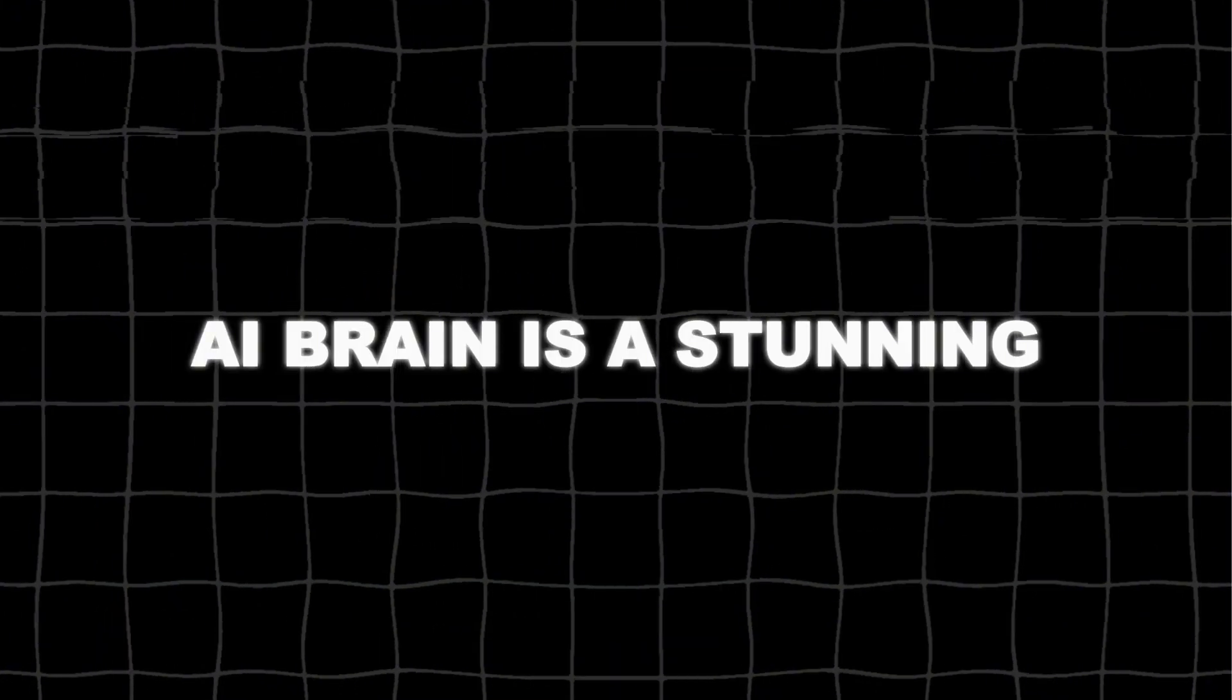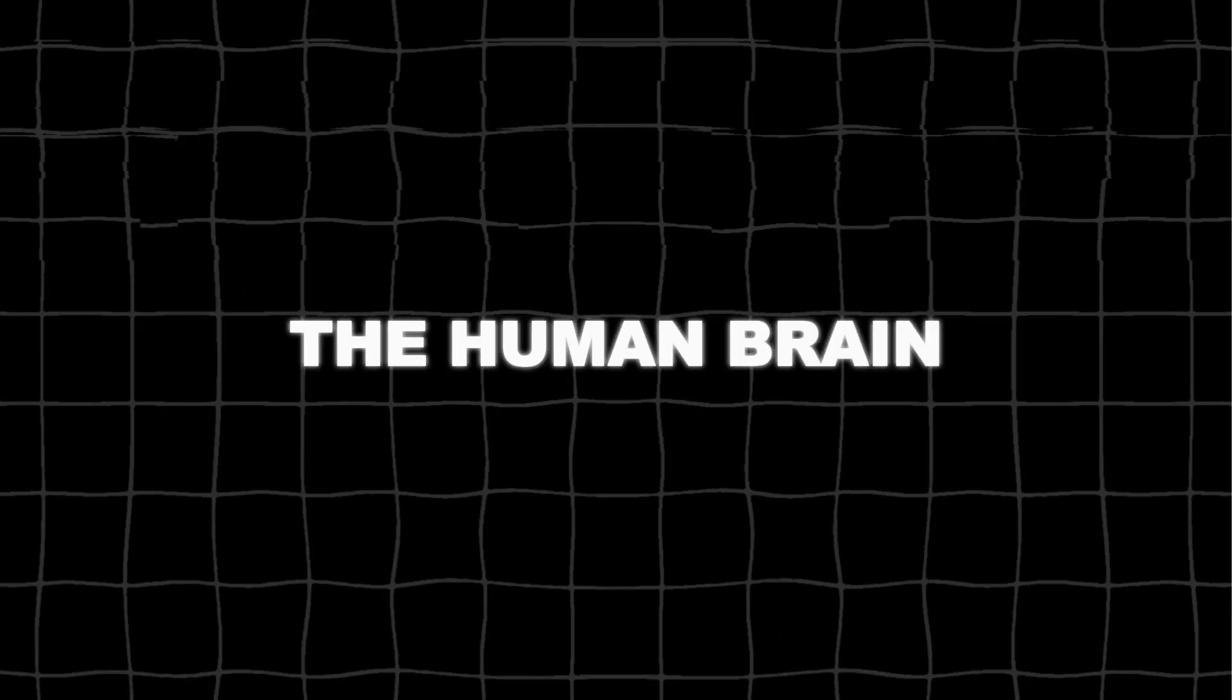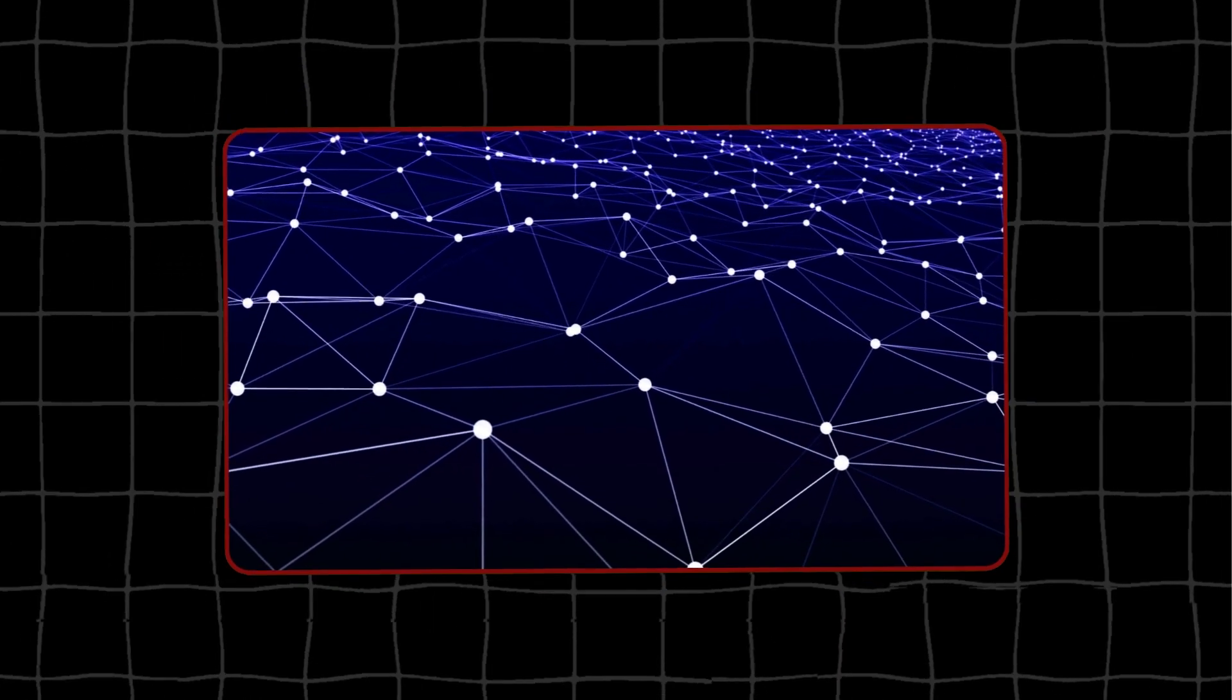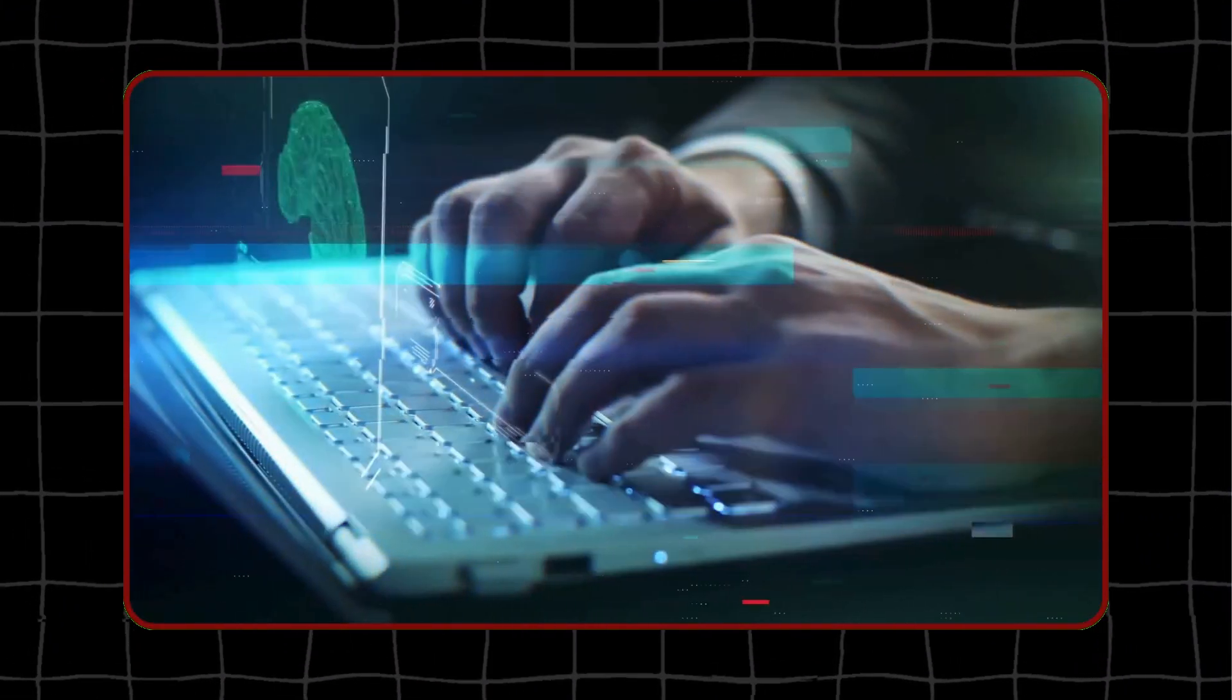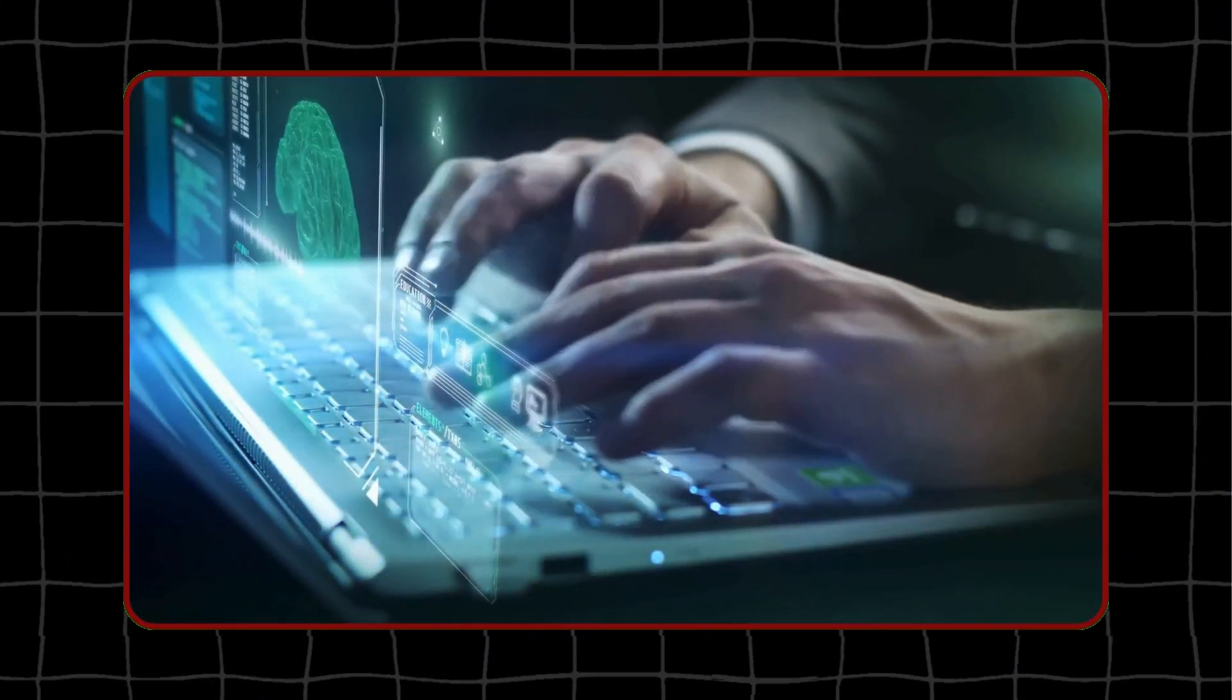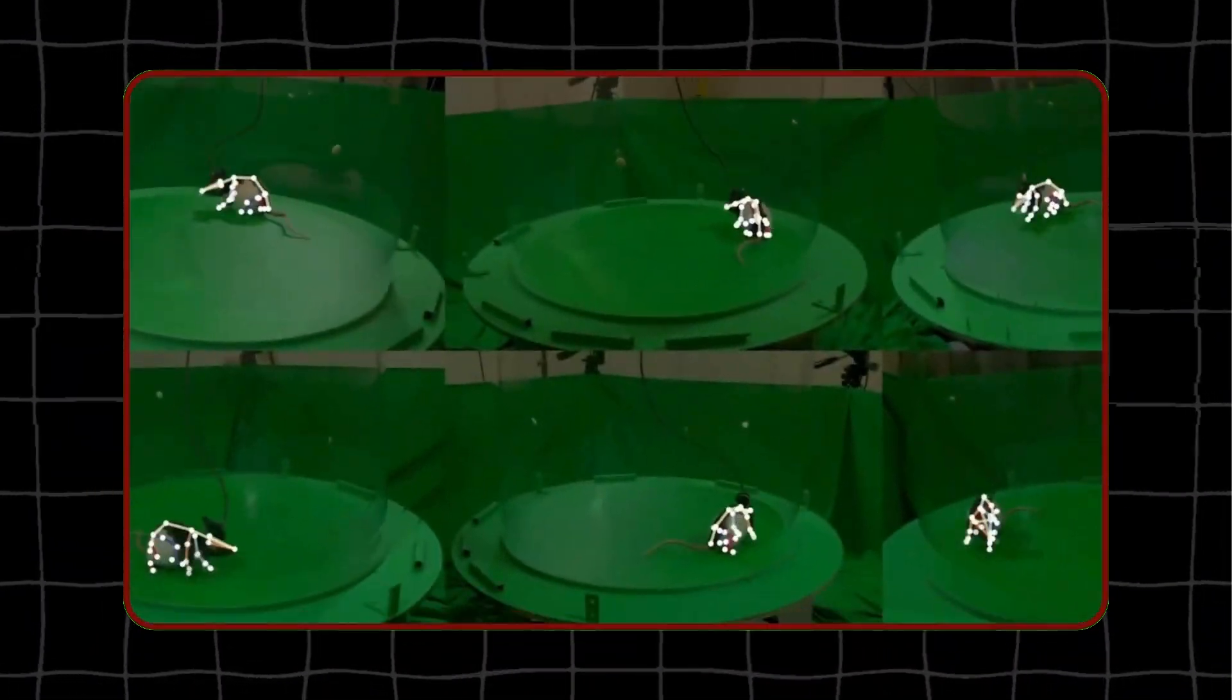Google DeepMind's AI brain is a stunning example of how AI can simulate and understand the human brain. It is also a glimpse into the future of neuroscience and artificial intelligence, where virtual models and simulations will play a vital role in advancing both fields. The virtual rat brain is just the beginning of this exciting journey, and I can't wait to see what comes next.